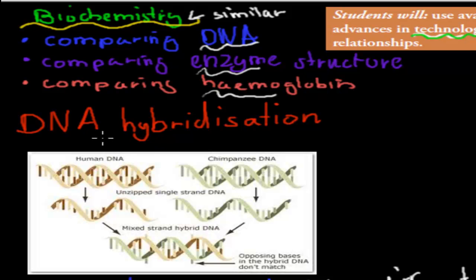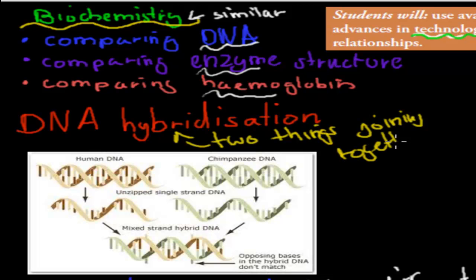So first we've got something called DNA hybridization. Hybrid refers to two things joining together. So in this case, the example, we actually have a DNA molecule here of a human. This is the human DNA. And then we have the DNA molecule of a chimp. And if you've ever seen the structure of DNA, it's wound up in this wound up shape here.